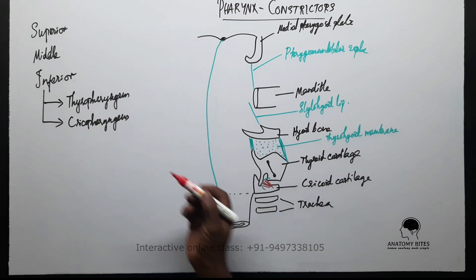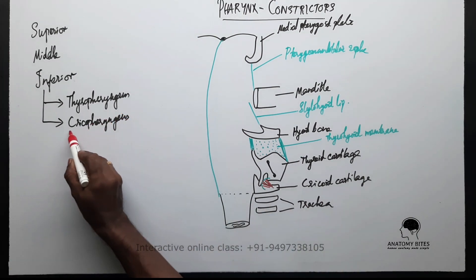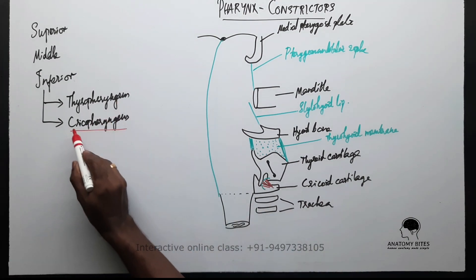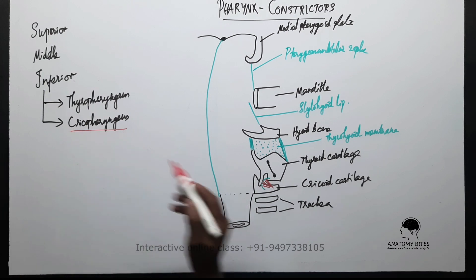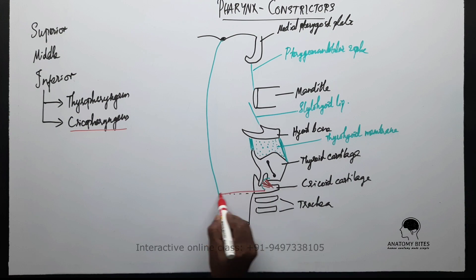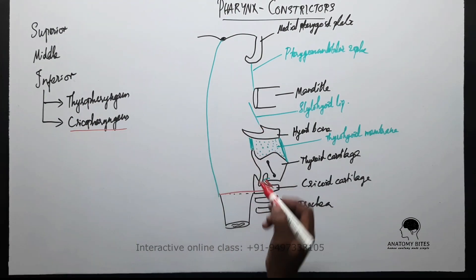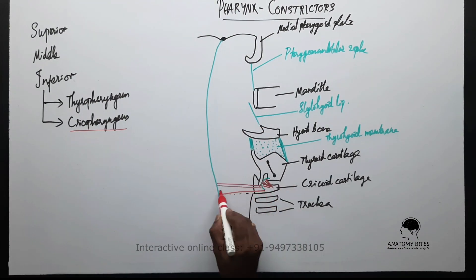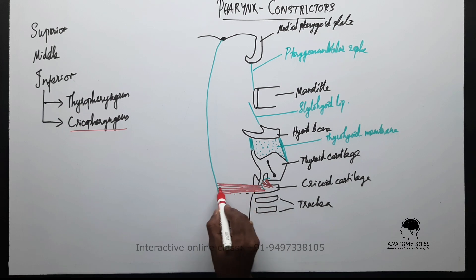Remember, the inferior constrictor has two parts: the cricopharyngeus and thyropharyngeus. The cricopharyngeus, as the name indicates, arises from the cricoid cartilage and is inserted into the pharyngeal raphe. The fibers are thick and it is more like a sphincter.